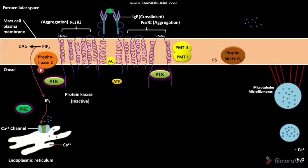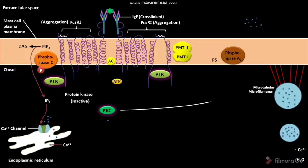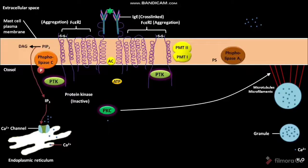The DAG causes activation of PKC. The activated PKC, along with calcium ions, is required for microtubular and microfilament assembly and the fusion of granules with the sensitized mast cell plasma membrane.